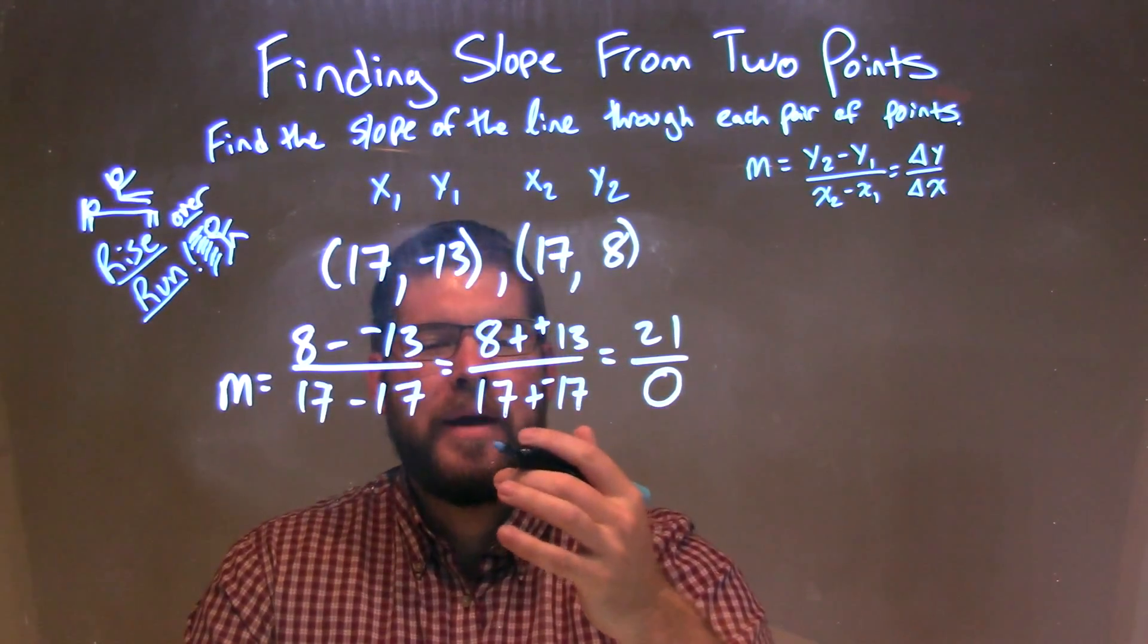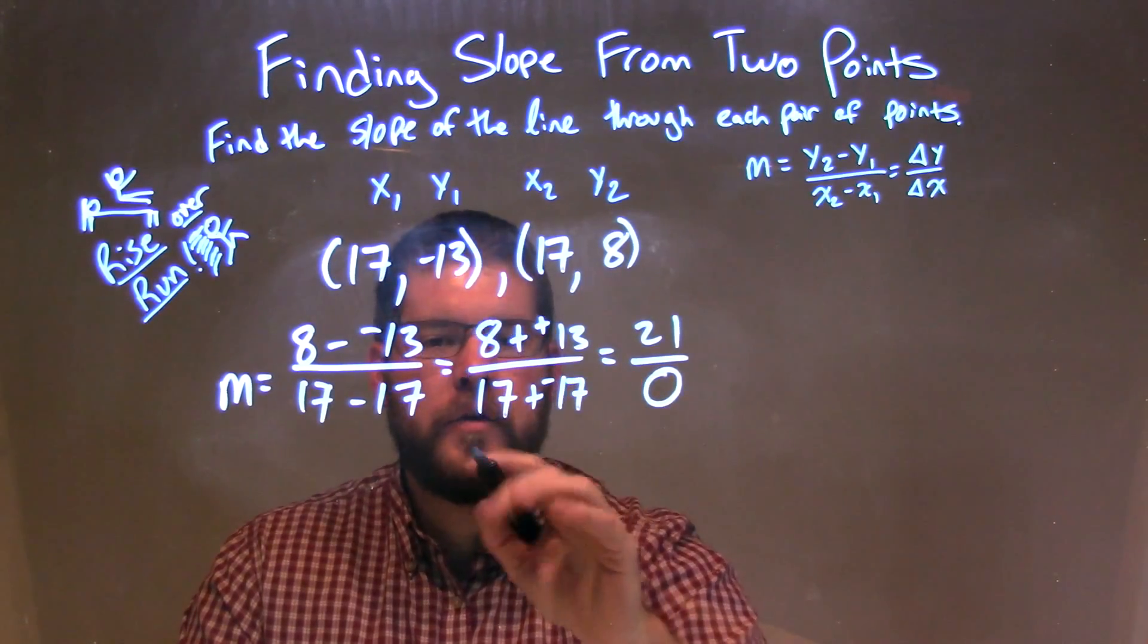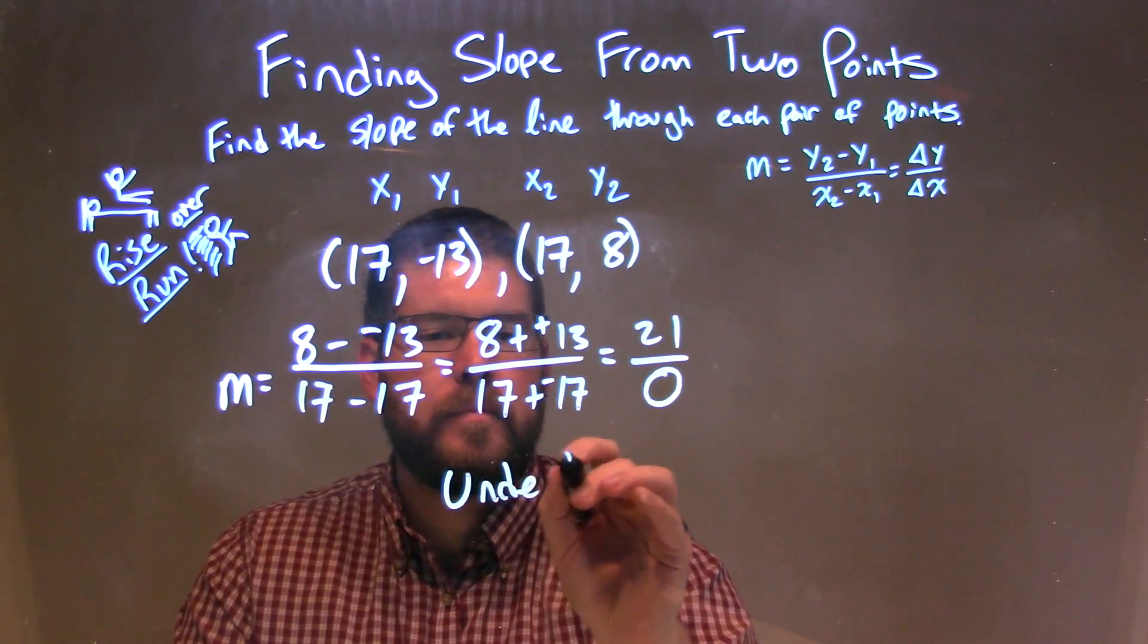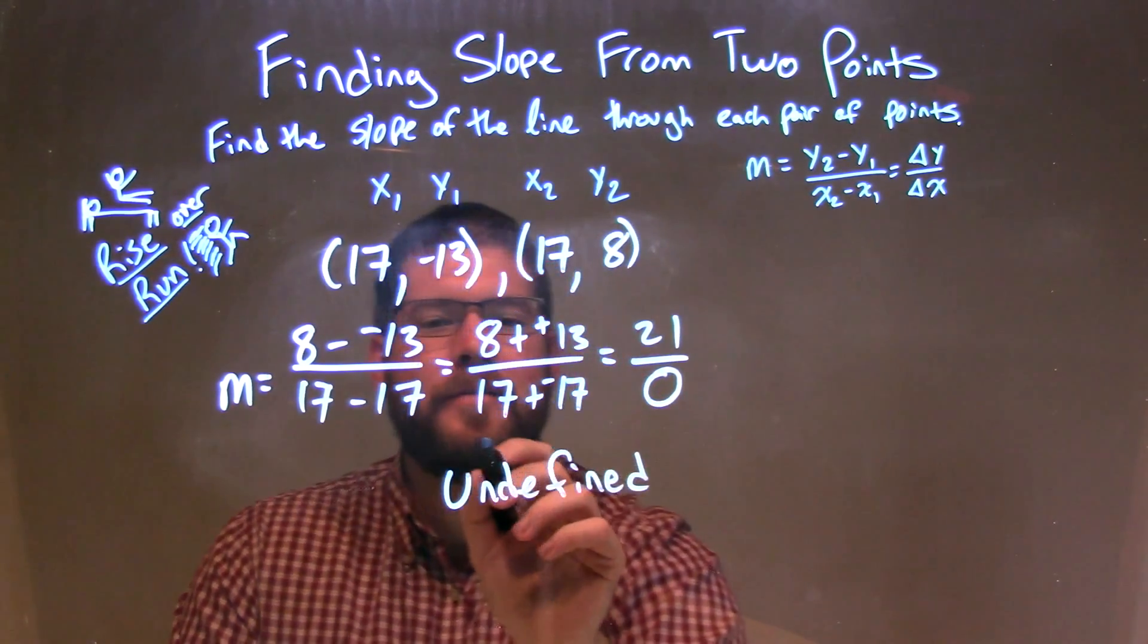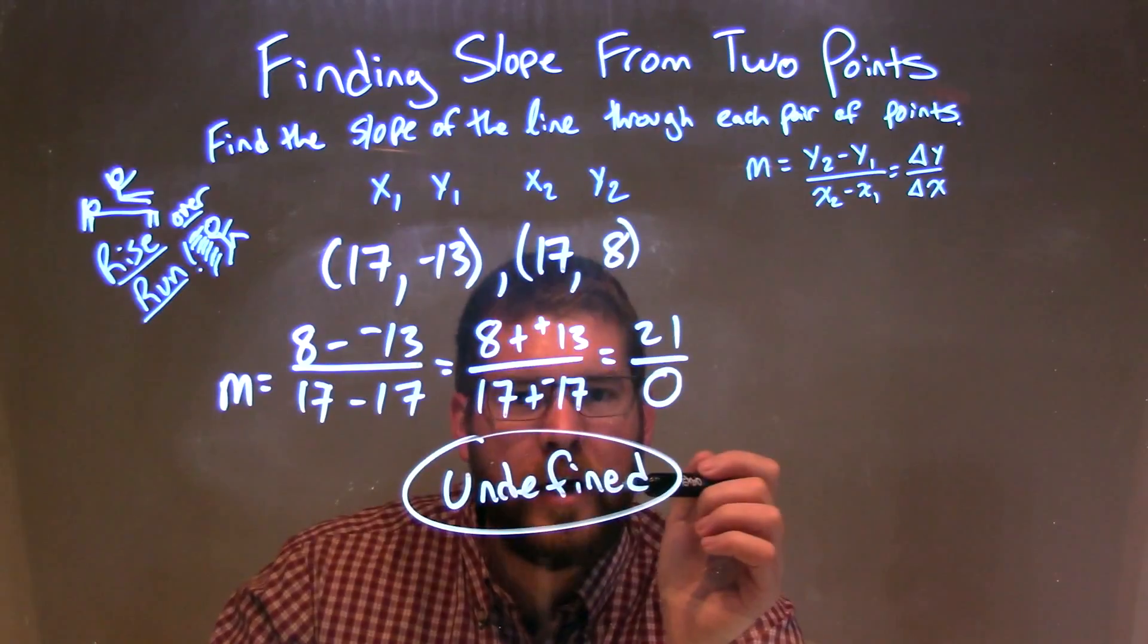We can't divide by a 0, we're not allowed to. So what is this slope? Well, since we can't divide by 0, we call this slope undefined.